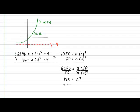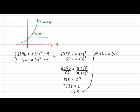Magically, the two a variables eliminate each other, leaving 125 equals c to the 3. Therefore, the third root of 125 gives us c, which is 5. Don't forget about solving for a using any of the two rules. Using the second rule: 46 equals a times 5 to the 2 minus 4, which gives us 46 equals 25a minus 4. Continuing: 50 equals 25a, and therefore a equals 2. So our rule is y equals 2 times 5 to the x minus 4.